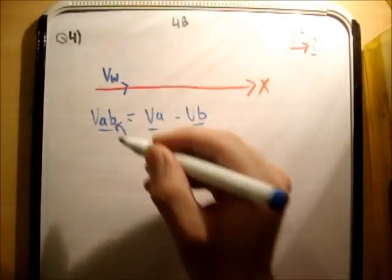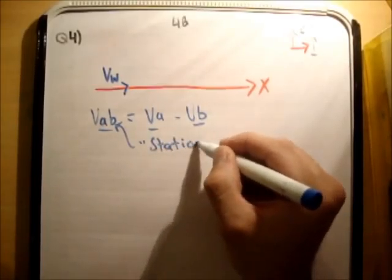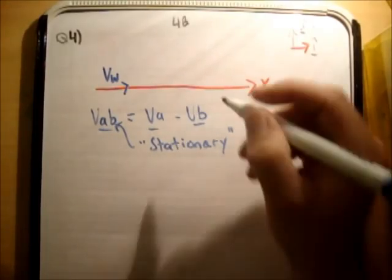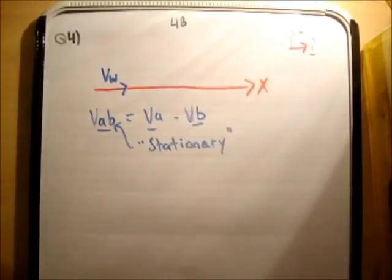However, it does mean that B is in a frame of reference where it believes it is stationary. It isn't physically moving, it isn't actually stationary, but it believes it's stationary. Because by rules made by Einstein, he's allowed to do that.